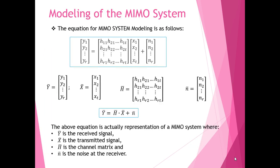Next, we come to the modeling of a MIMO system. Let us consider a MIMO system having T transmitting antennas and R receiving antennas. Then the modeling of the MIMO system will be as given in the equations here.